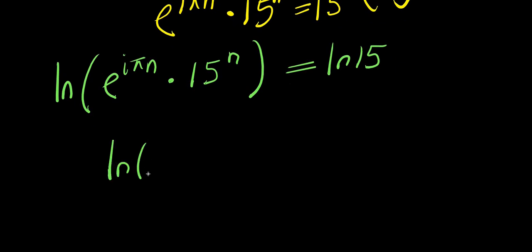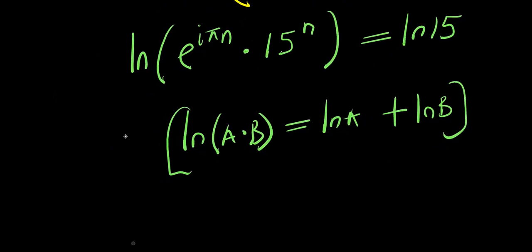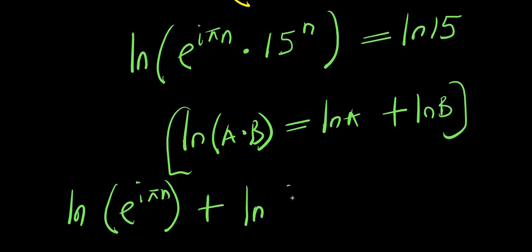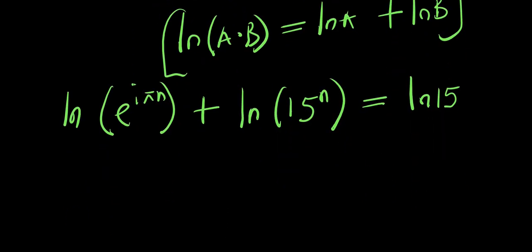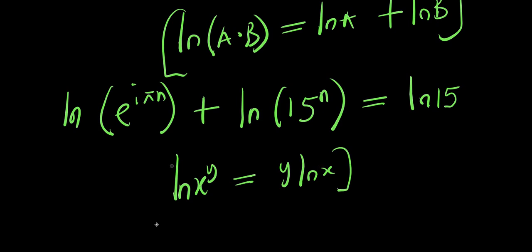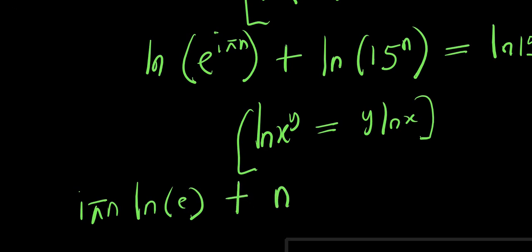And if you have natural log of a times b, this equals natural log of a plus natural log of b. So from here I have natural log of e to the power of i times pi times n, plus natural log of 15 to the power of n equals natural log of 15. Remember if you also have natural log of x to the power y, this equals y times natural log of x. So we have i times pi times n times natural log of e, then plus n times natural log of 15 equals natural log of 15.